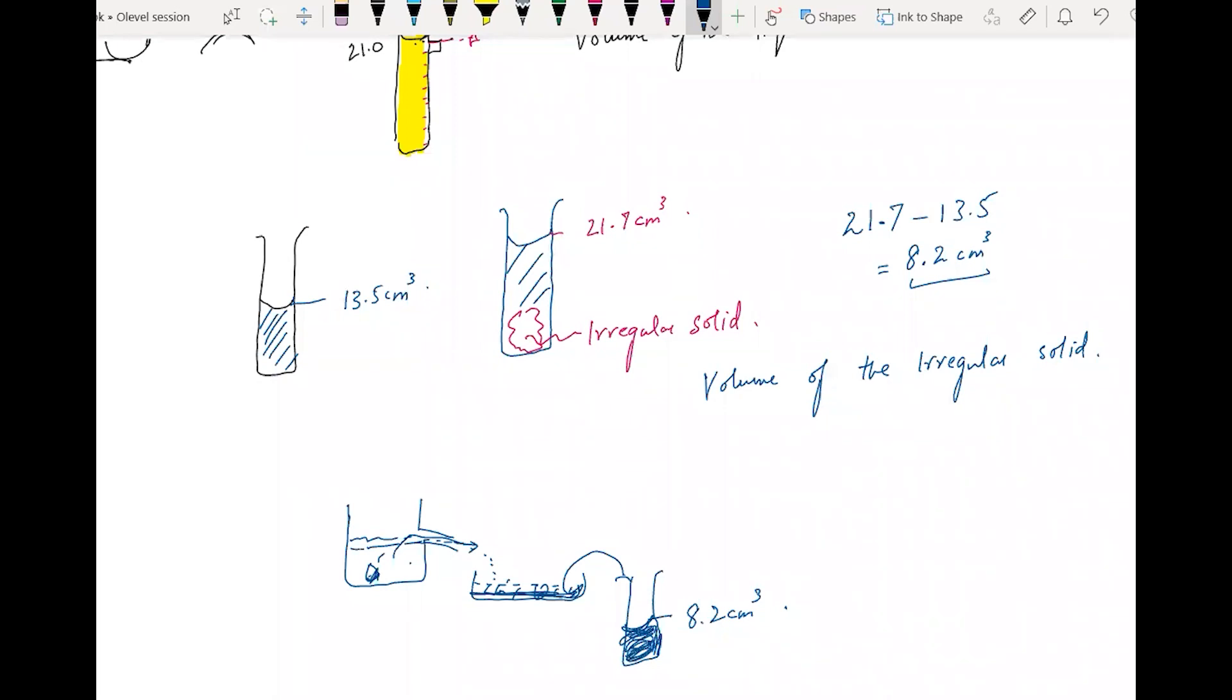The measuring cylinder will give you the volume of the solid. This is another way - this is the eureka can, and you can find the volume of solid by displacement.